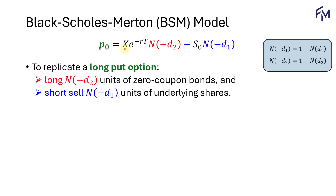Next, we'll move to the put option. In the formula, we have the long put option on the left, and on the right we start with the PV of the zero coupon bonds. The coefficient is N of negative D sub 2, which equals 1 minus N of D sub 2. Then for the share component, we have minus N of negative D sub 1. So we will long the bonds because of the positive coefficient, and short sell the shares because of the negative coefficient.